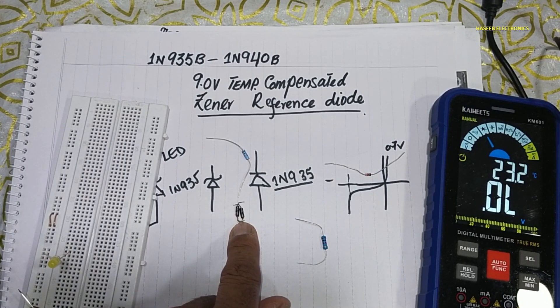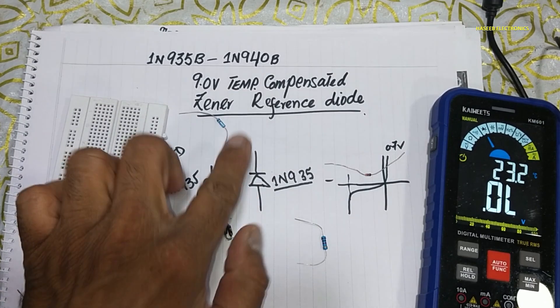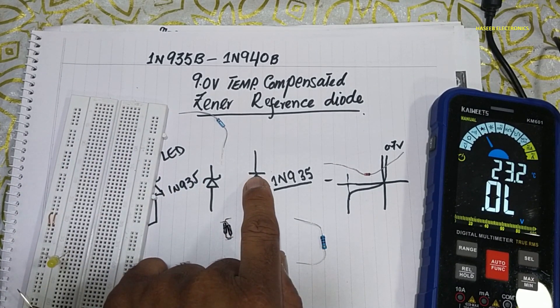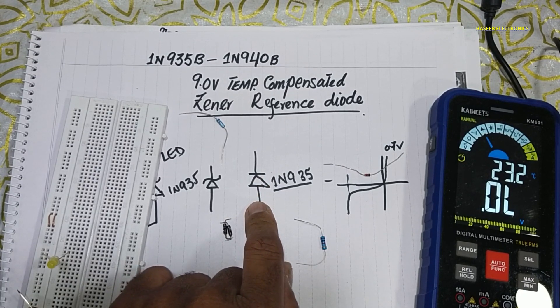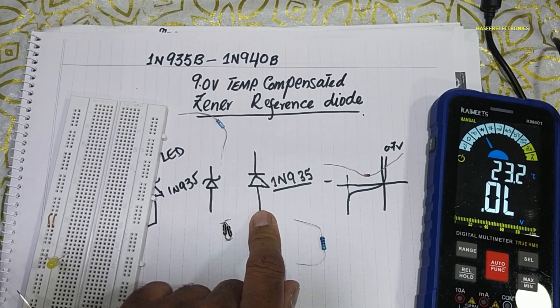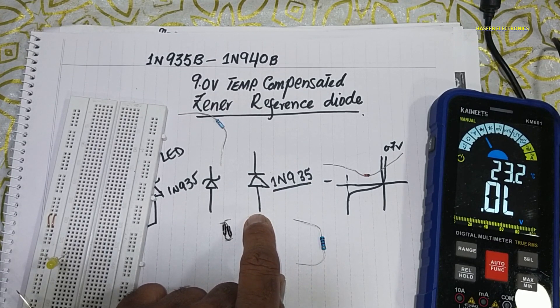If you see the diagram, most of the time it is shown as a simple diode with number 1N935 and it is connected in reverse bias. Anode is connected to ground side and cathode as output terminal.